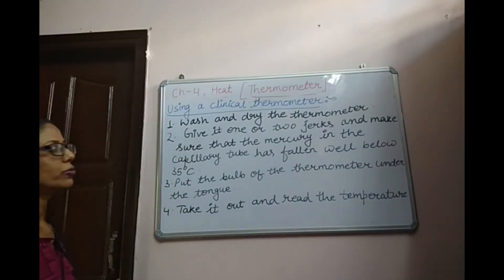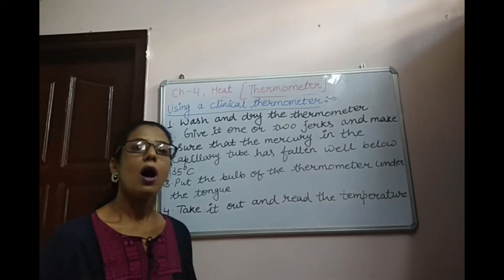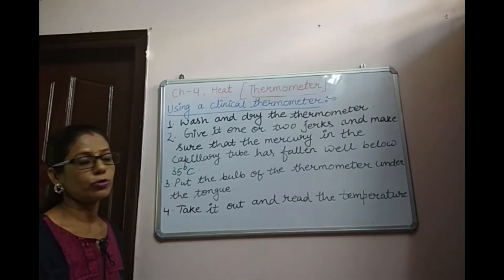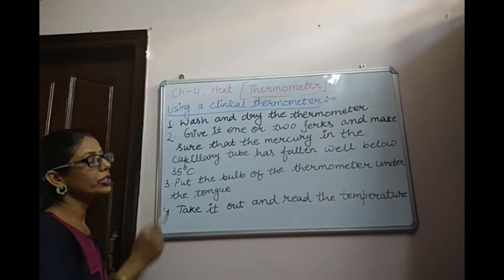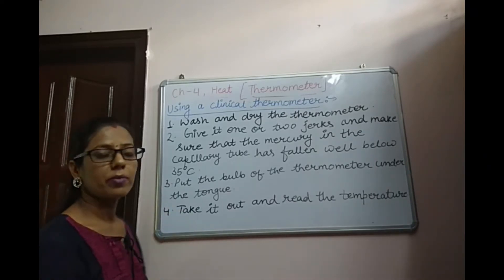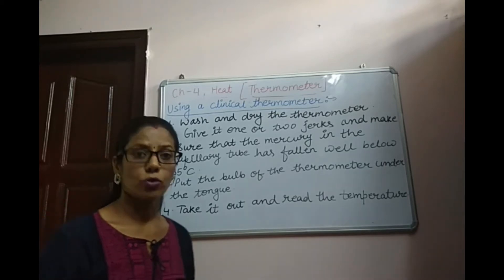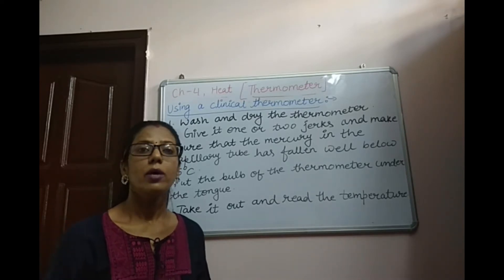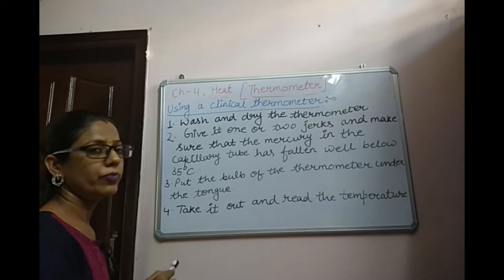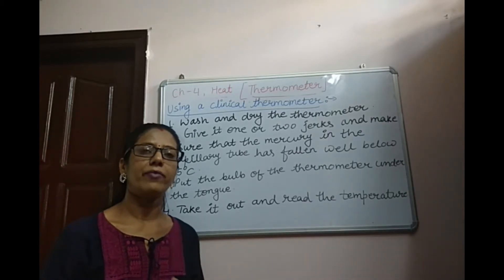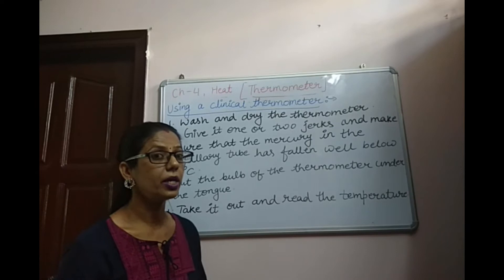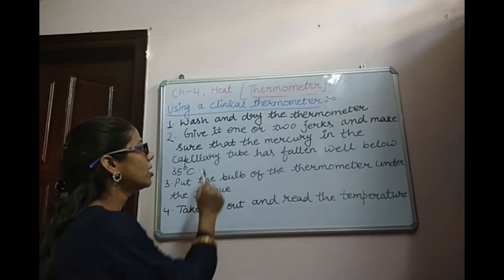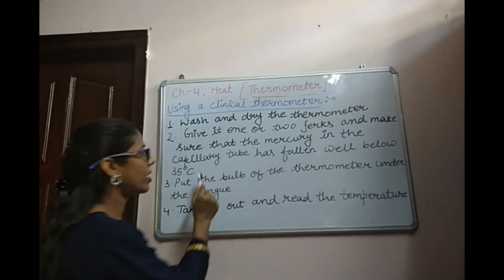Our next topic is using a Clinical Thermometer. The first step is to wash and dry the thermometer. We wash it with an antiseptic solution and dry it with a clean cloth before and after every use. Next, give it one or two jerks to make sure the mercury in the capillary tube has fallen well below 35 degree Celsius.